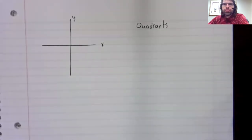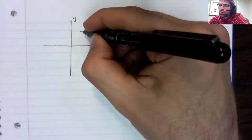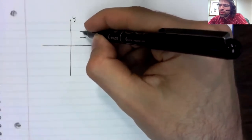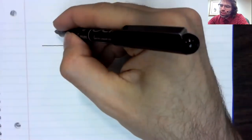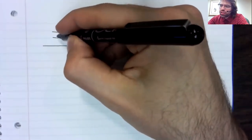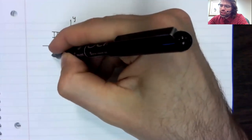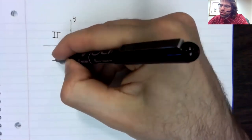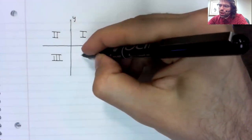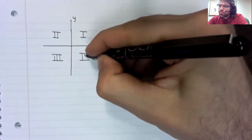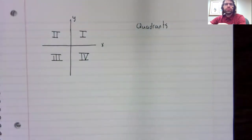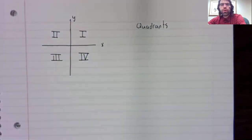Those pieces are called quadrants, and they are traditionally represented using Roman numerals. This is quadrant one, and then for whatever reason, they're numbered counterclockwise: one, two, three, four.